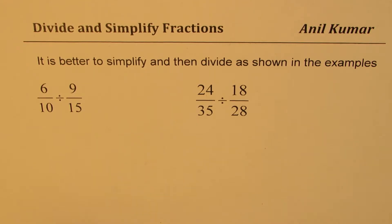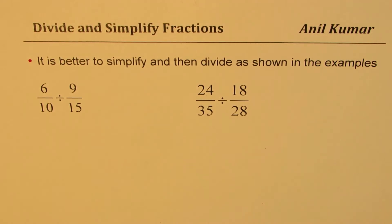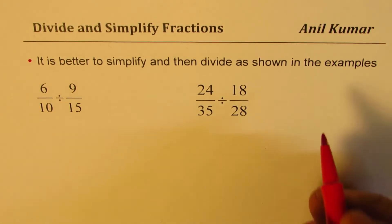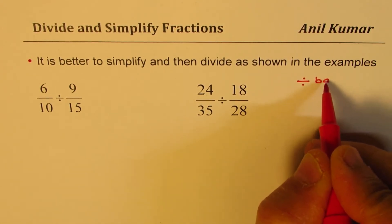Now, the first part of simplification is that division by, let's say, division by a is equal to multiplication by 1 over a.